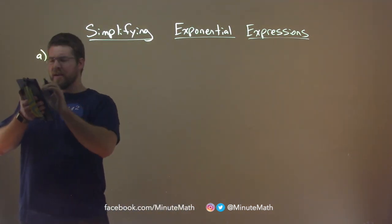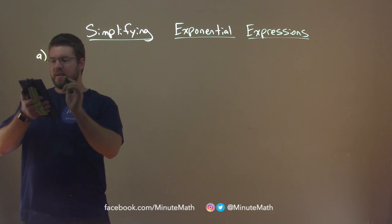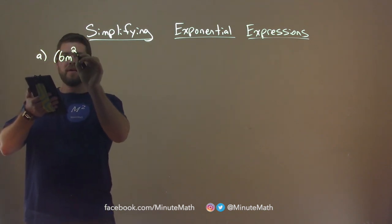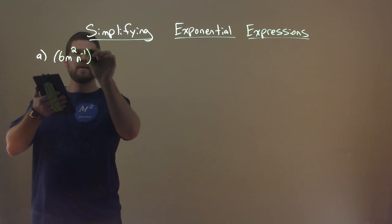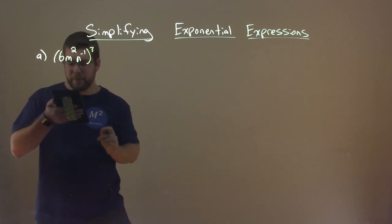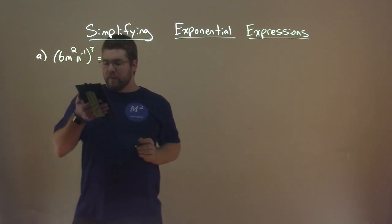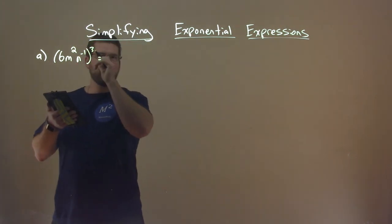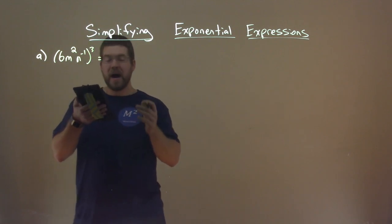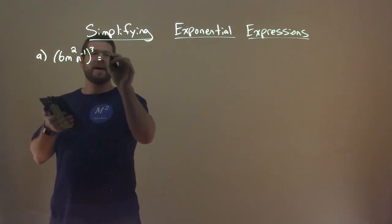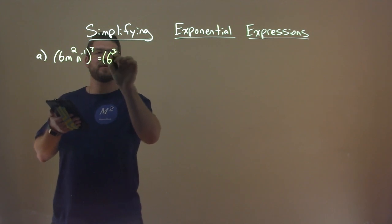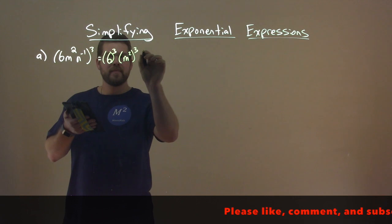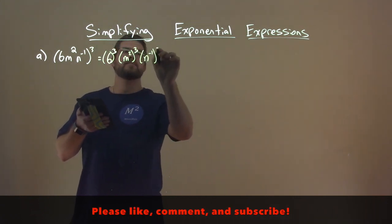First one, let's zoom in a little here. We have 6m squared n to the negative 1 power, all to the third power. My first step here is I'm going to distribute this exponent using the power of a product rule to all parts. So we have 6 to the third power, times m squared to the third power, and n to the negative 1 to the third power.